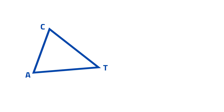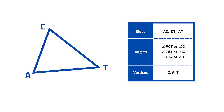Consider triangle ACT. Its sides, angles, and vertices are the following. Sides are side AC, side CT, and side AT. The angles are angle ACT or angle C, angle CAT or angle A, and angle CTA or angle T. The vertices are endpoints C, A, and T.